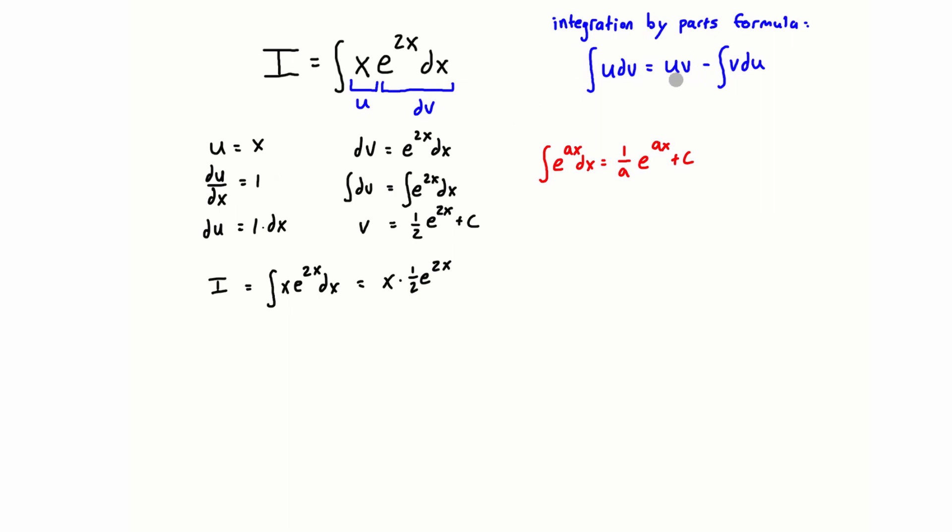So we have u times v, which is just right here, u times v. Now we need to subtract the integral of v times du. So minus the integral of v, and again we have v right here, 1 half e to the 2x plus c, but I'm going to drop the plus c for now. And we're going to multiply this because it's multiplied to du, and du is 1 dx. So we can multiply that by 1 dx.